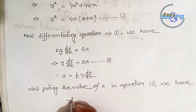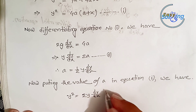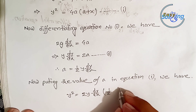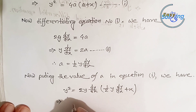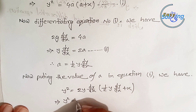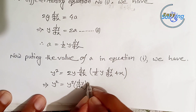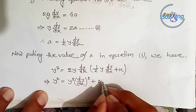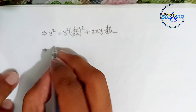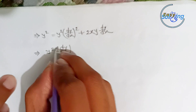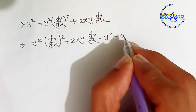Putting the value of A in equation 1, we have y² = 2y · (dy/dx) · [(1/2)y · (dy/dx) + x]. Simplifying the next line: y² = y² · (dy/dx)² + 2xy · (dy/dx).